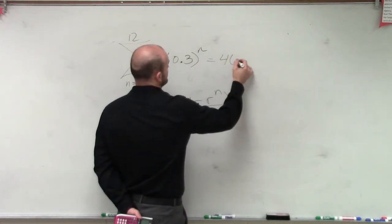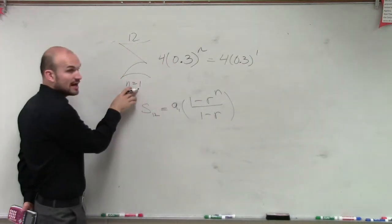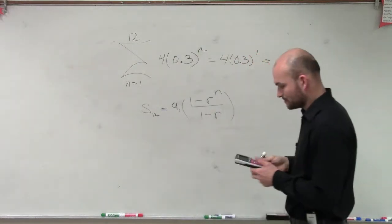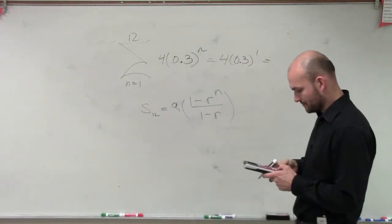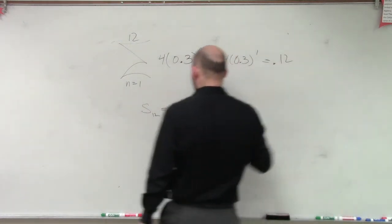Well, 4 times 0.3 raised to the 1, because it does start at 1, is going to equal 4 times 0.3, which let's figure that out. So it's going to be 0.12, I guess. Probably could have done that on my own.